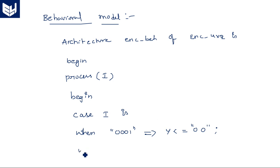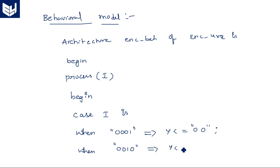When I is 0010, Y is assigned with 01. When I is 0100, Y is assigned with 10.